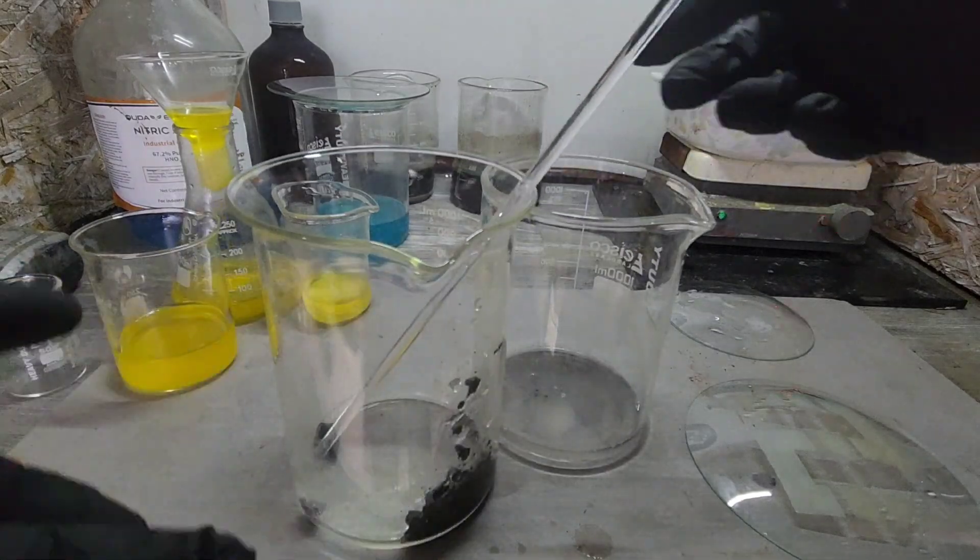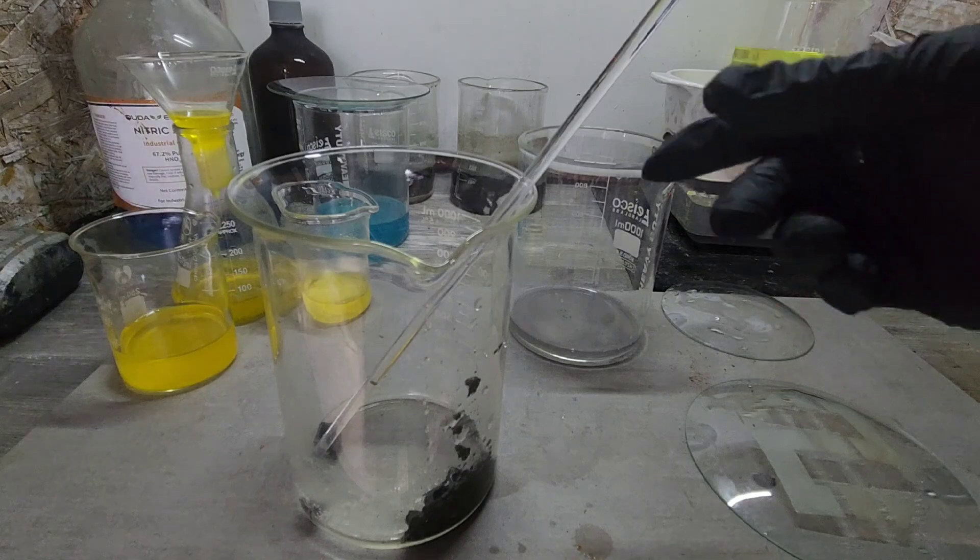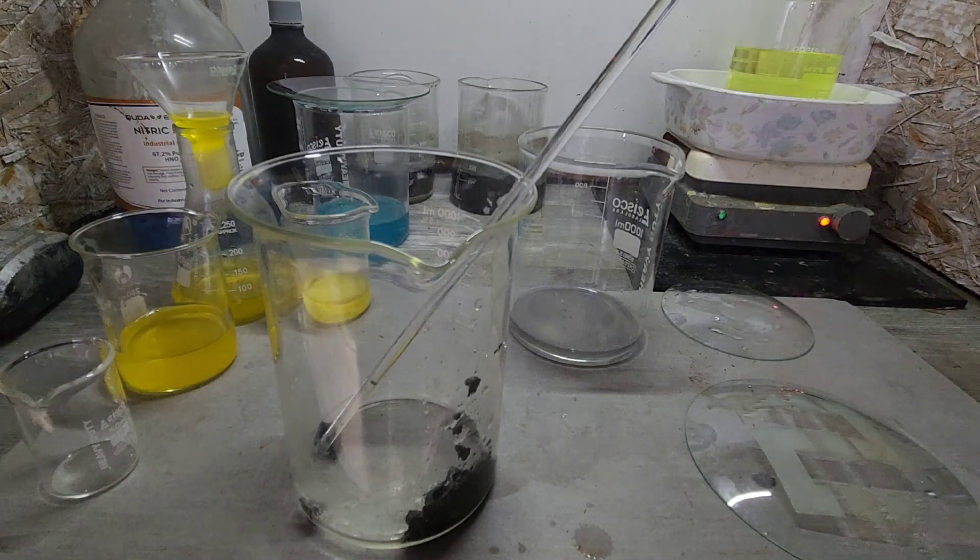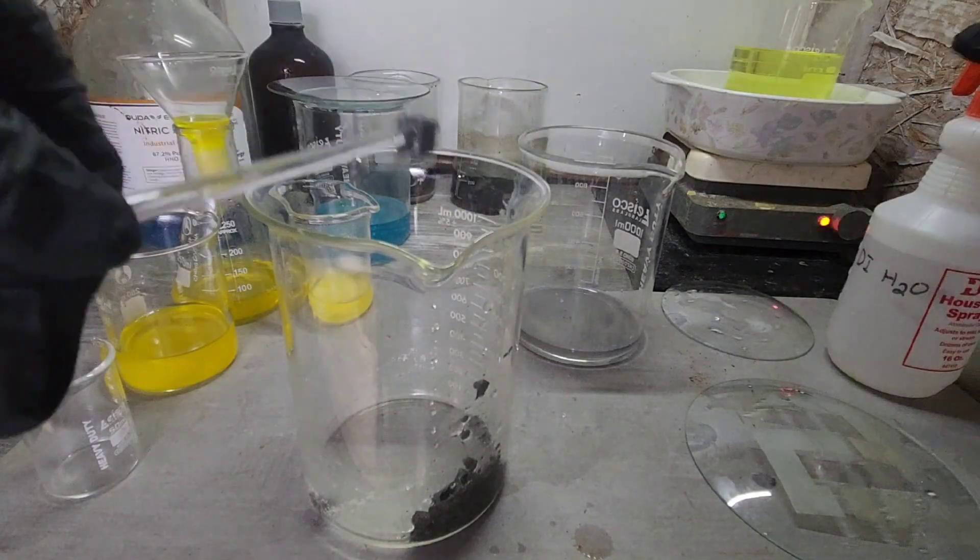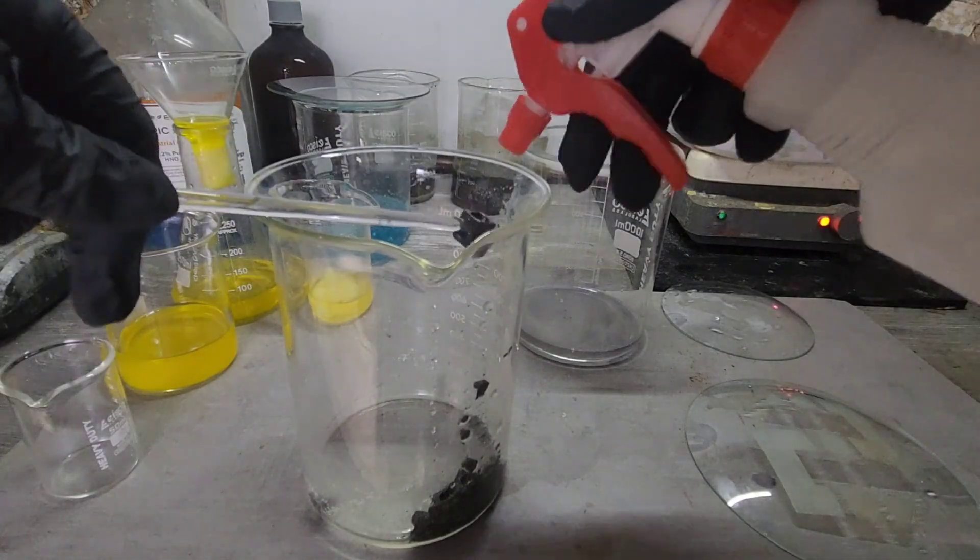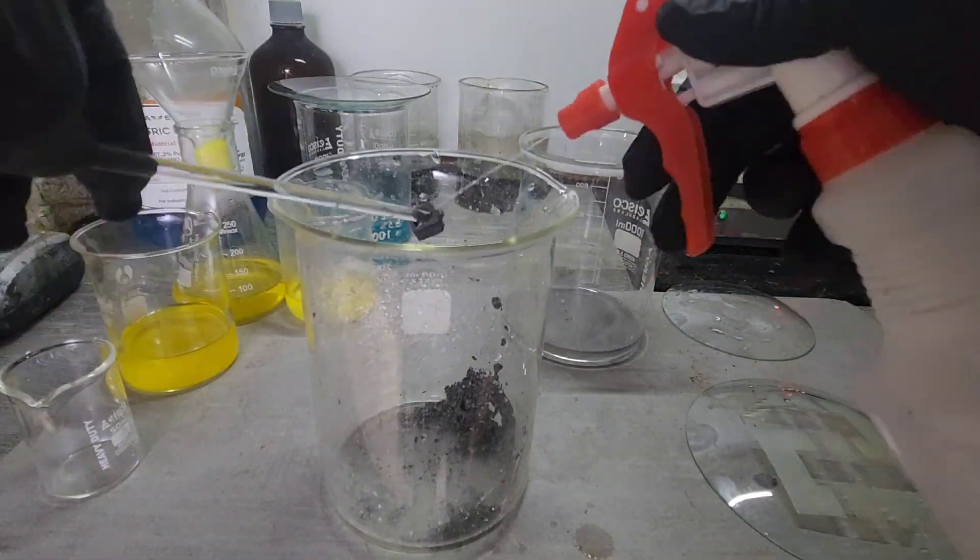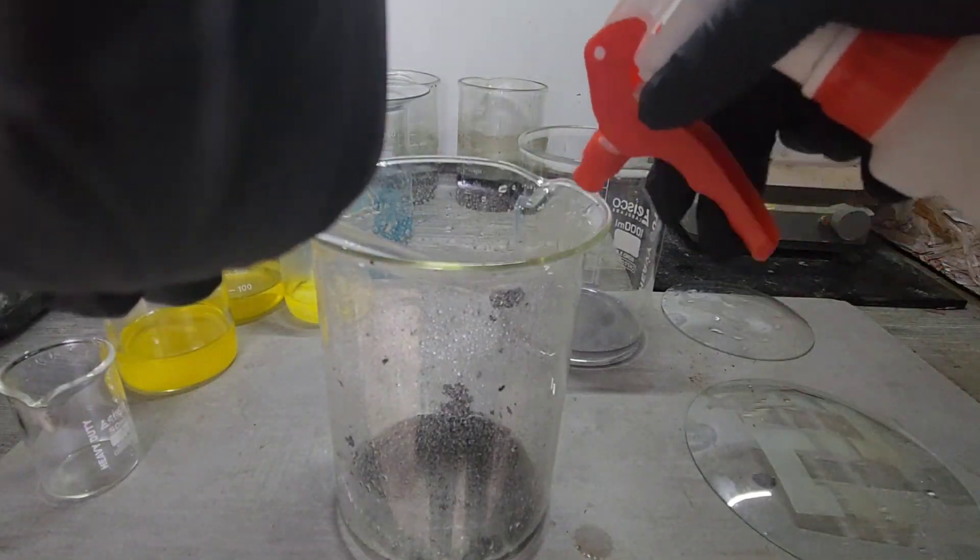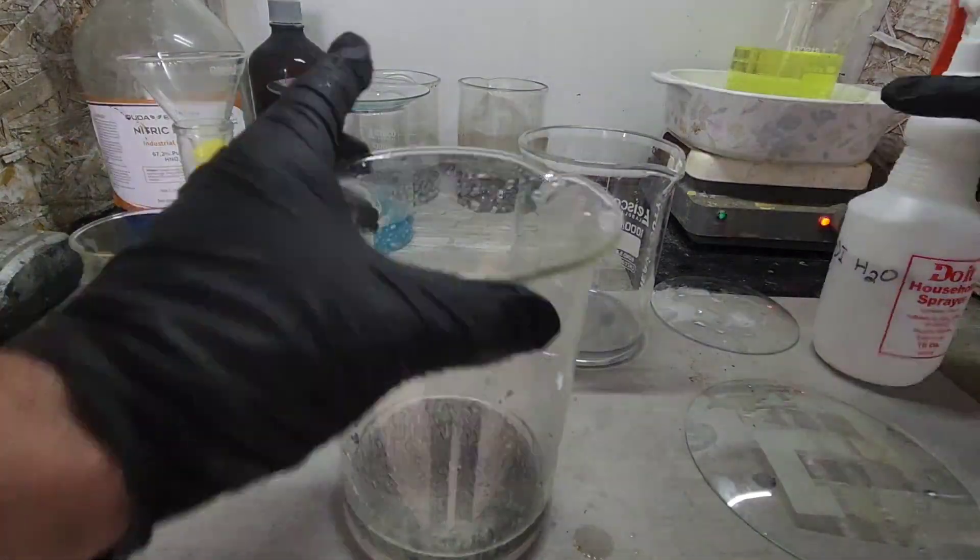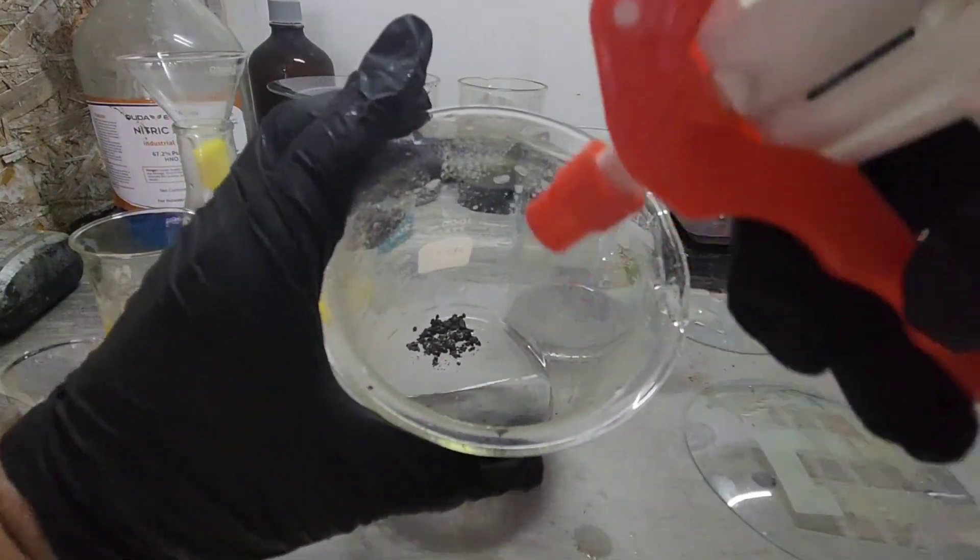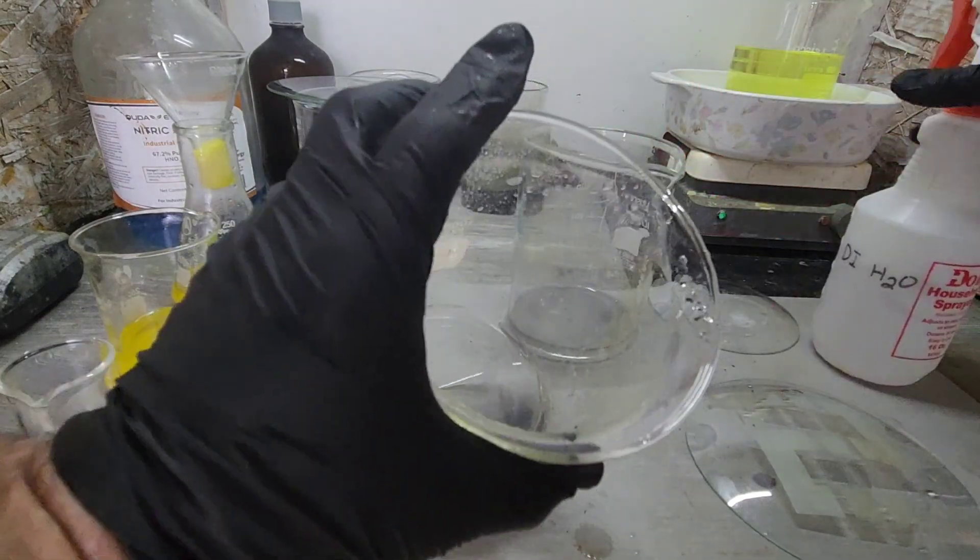So I want to get these three little aluminum pieces out which do contain silver. And we have a decent amount of cement silver in there.